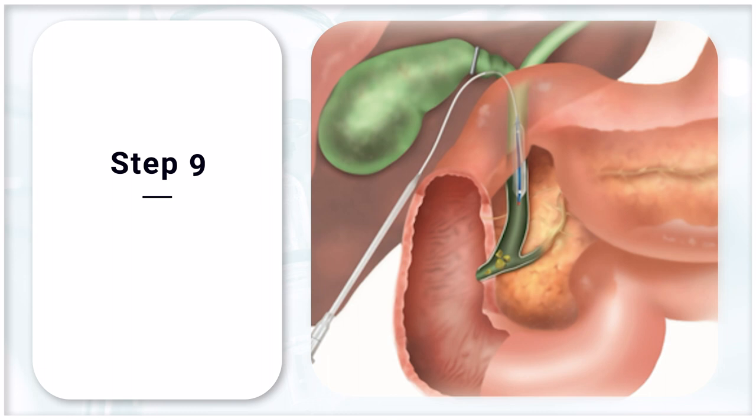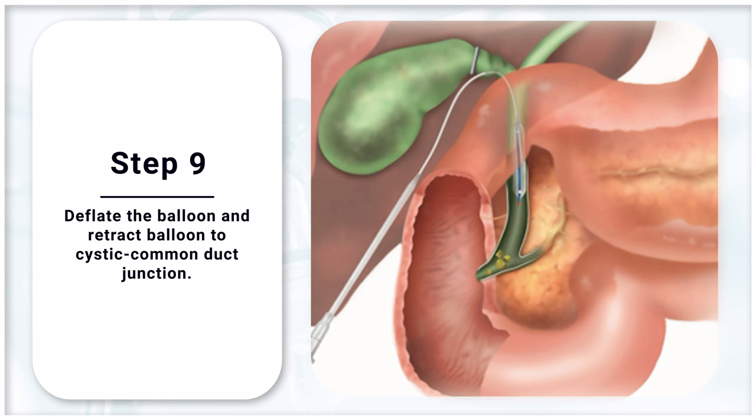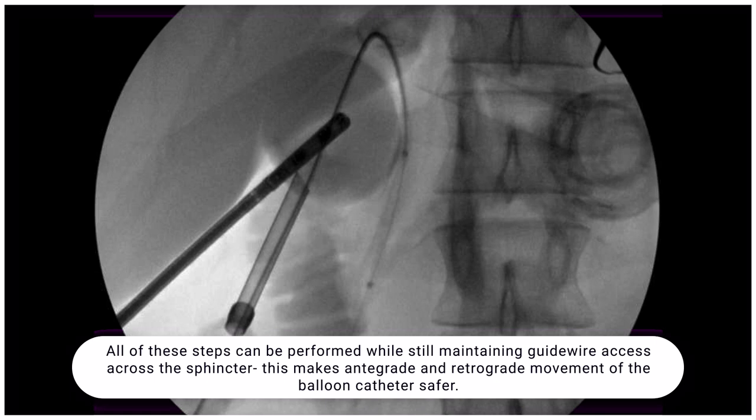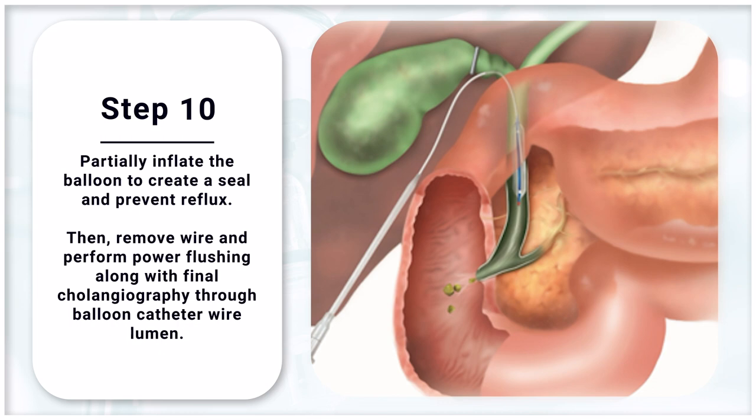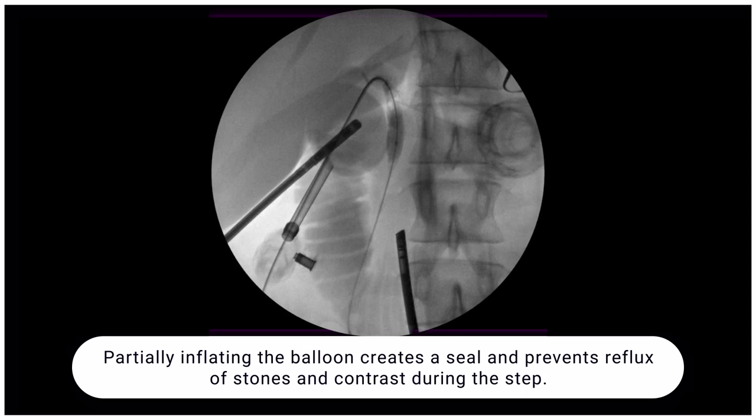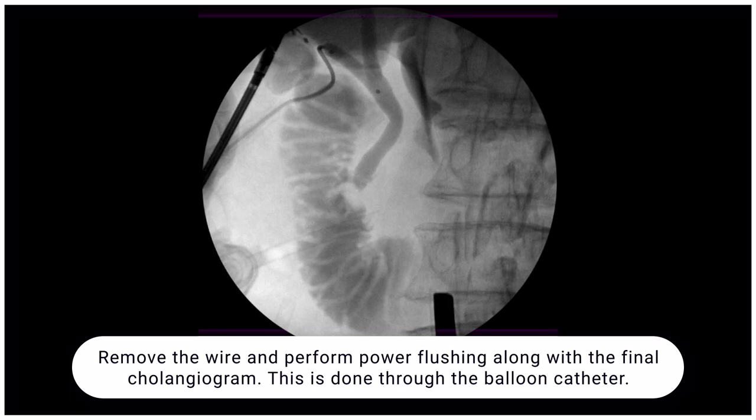Step 9: Deflate the balloon and retract it to the cystic common duct junction. All these steps can be performed while still maintaining glide wire access across the sphincter, making antegrade and retrograde movement of the balloon catheter safer and easier. Step 10: Partially inflate the balloon to create just apposition between the balloon and the wall of the duct. This creates a seal and prevents reflux of stones and contrast. Then remove the wire and perform power flushing along with a final cholangiogram through the balloon catheter.